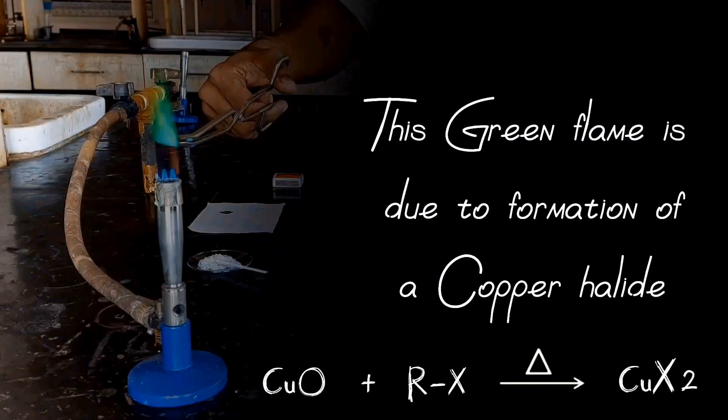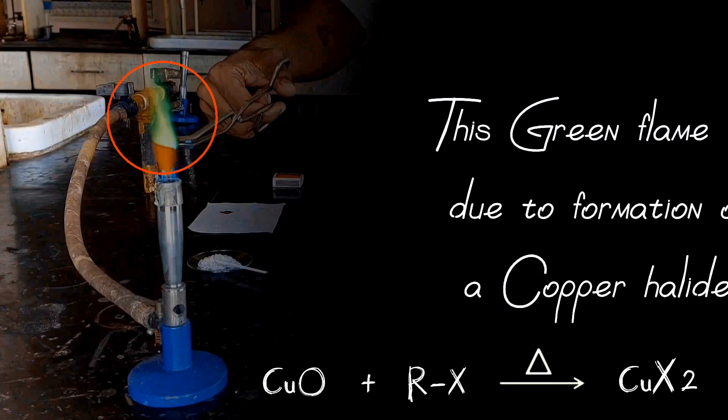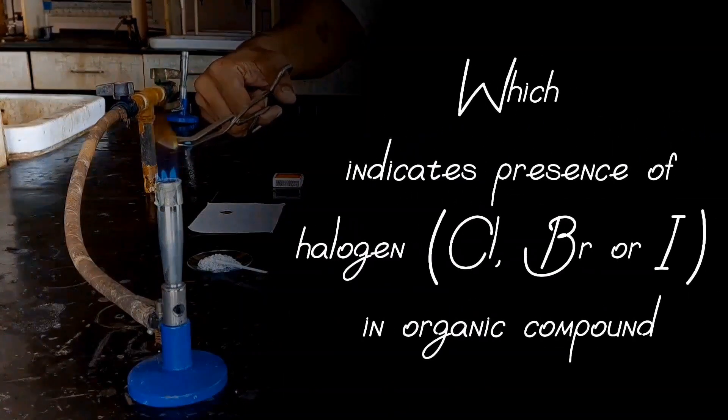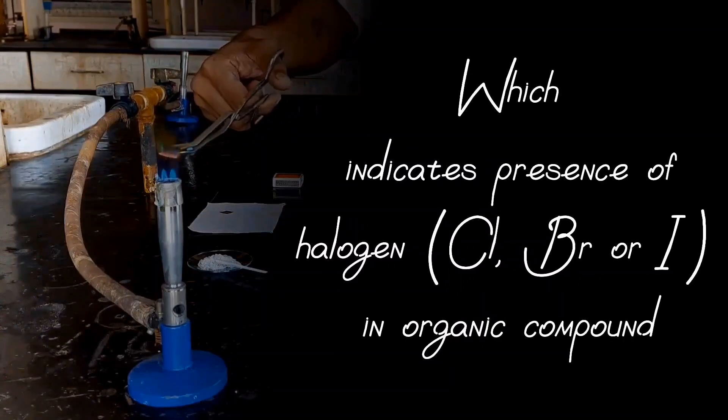This green flame is due to formation of a copper halide, which indicates presence of halogen (Cl, Br or I) in organic compound.